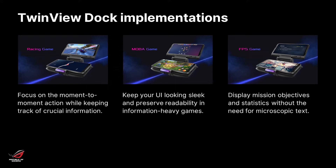And finally, gaming on a 6-inch display can sometimes mean that text gets really small and hard to read. With the TwinView, you can move secondary information like statistics, mission objectives, settings, and stuff like that to the secondary screen and keep fonts crystal clear.